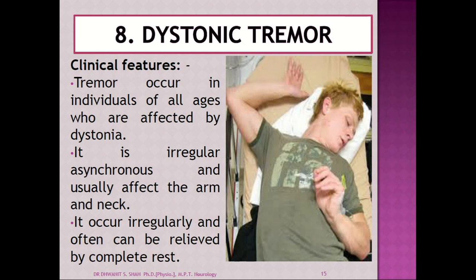The eighth type is dystonic tremor. The tremor occurs in body parts affected by dystonia. It is irregular and asynchronous, usually affecting the arm and neck. It occurs irregularly and can often be relieved by complete rest given to the patient. It is most commonly seen in all types of dystonic patients.